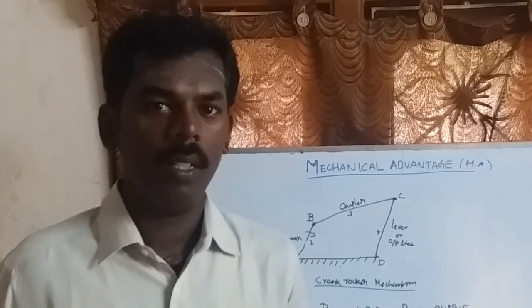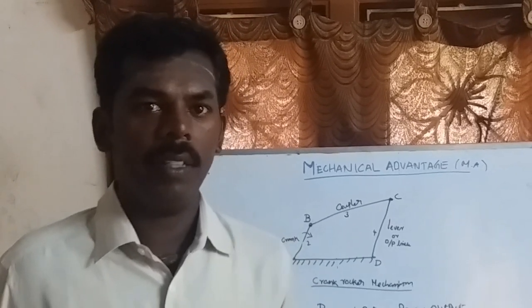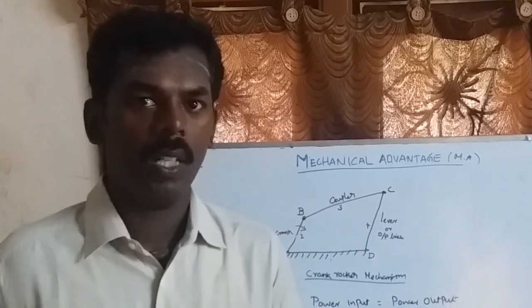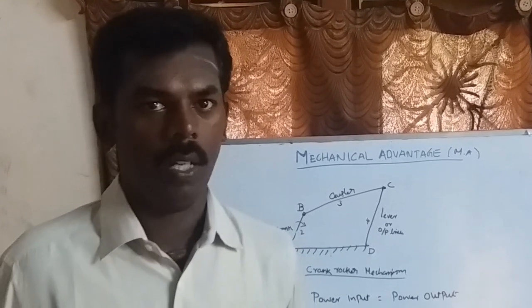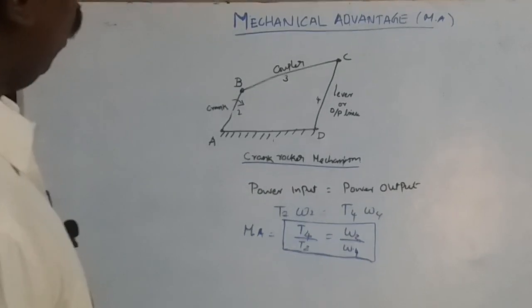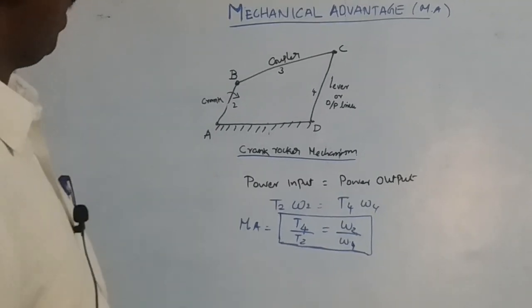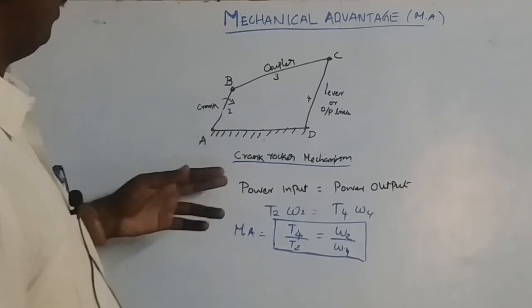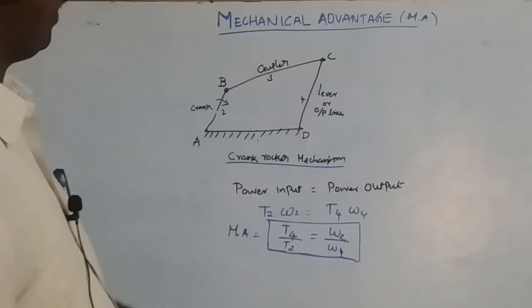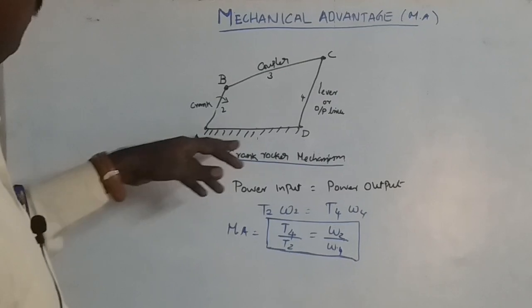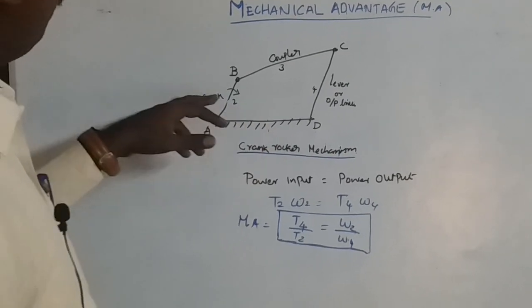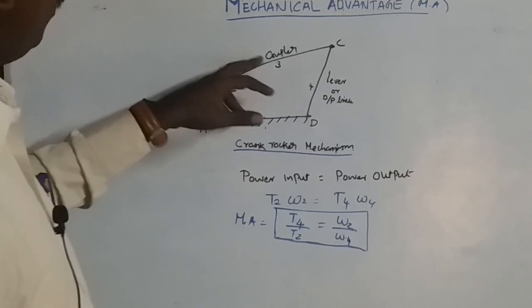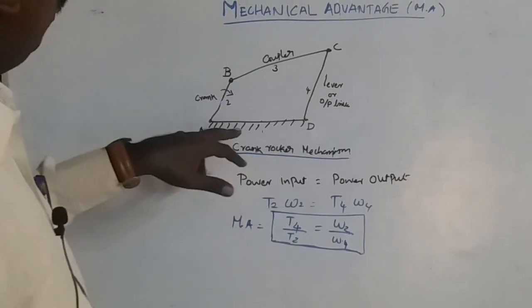In this condition, neglecting friction and inertia, it is a planar mechanism like the crank-rocker mechanism. The crank-rocker mechanism consists of a frame, crank, coupler, and lever.